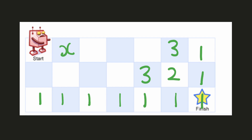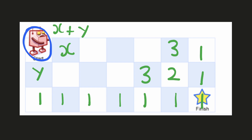We can compute the result for all the cells, and to calculate the total number of paths, we add the results for the first cell towards right and the first cell towards down. In this approach, we are starting from the smallest subproblem — when the robot is already at the destination — and gradually using this result to find the solution for larger subproblems, until we compute the result for the initial position of the robot. This approach is called the bottom-up approach.